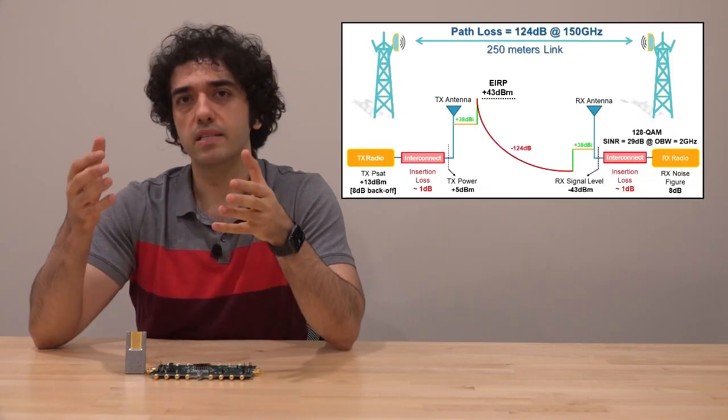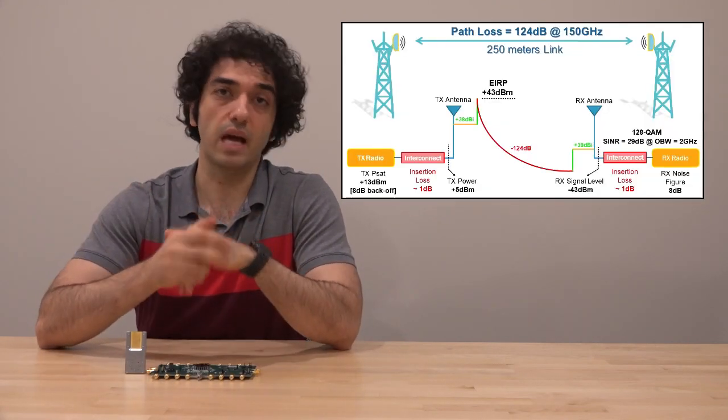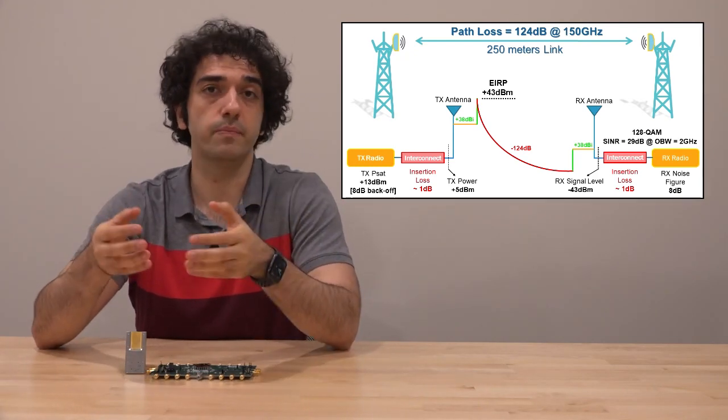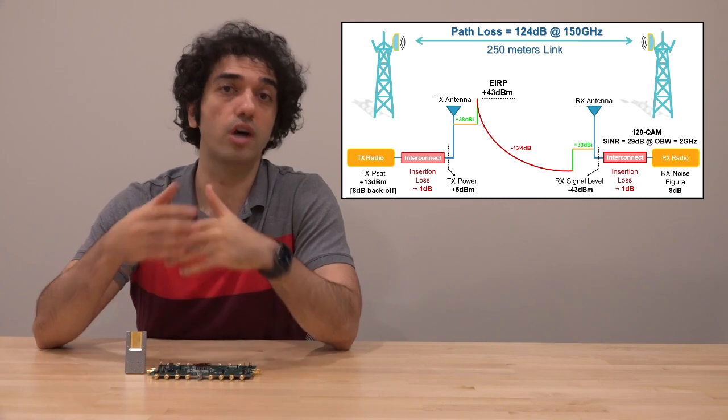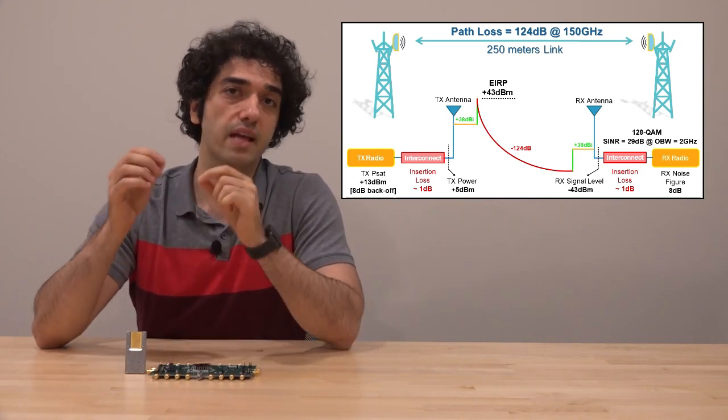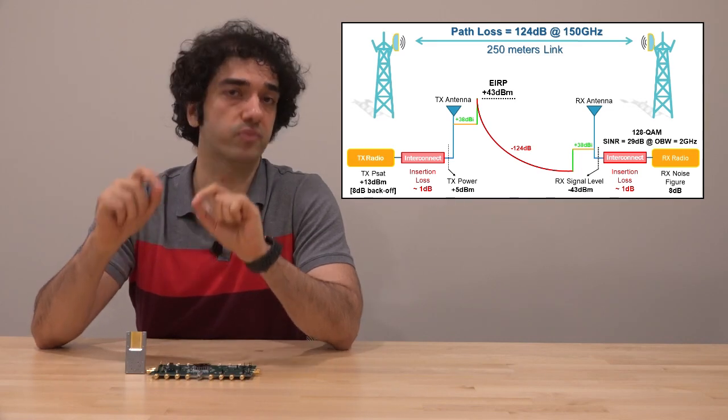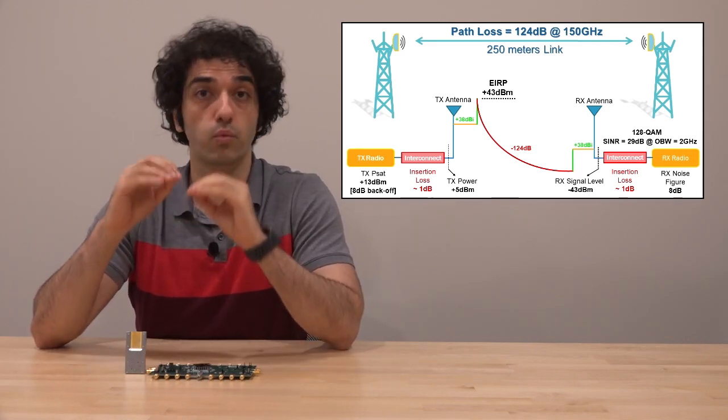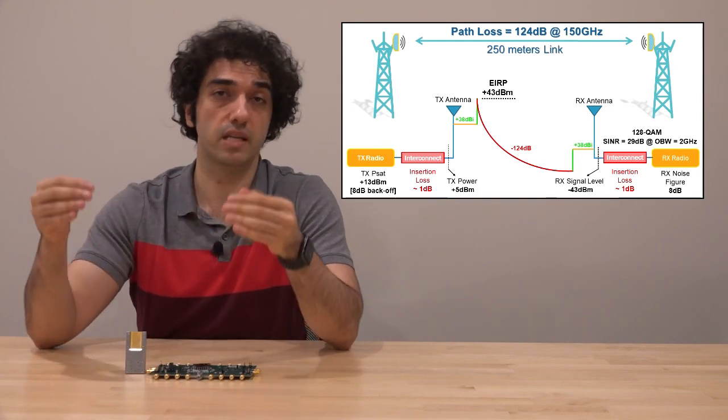So if you want to make a D-band point-to-point link happen, we have to analyze what it takes. And if you look, even at 250 meters, the free space path loss is 124 dB. This is a huge number. It means that every component of the system, the packaging, the RFIC, the interconnect, all have to be world-class in order to make this link even possible.